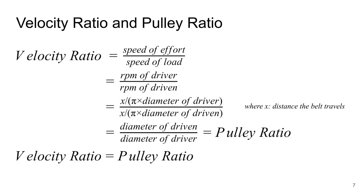The rotational velocity of a pulley is inversely related to its circumference. Therefore, the formula for velocity ratio translates to the diameter of the driven divided by the diameter of the driver — and this is the pulley ratio. So, velocity ratio is equal to pulley ratio. This is the key thing to remember.